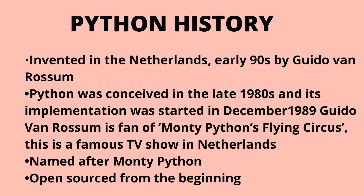Let's discuss the history of Python. Python was conceived in the late 1980s and its implementation was started in December 1989 by a developer called Guido van Rossum. Guido van Rossum was a fan of Monty Python's Flying Circus, a famous TV show in the Netherlands, and so he chose the name Python, which was picked in December 1989.